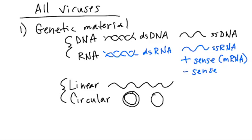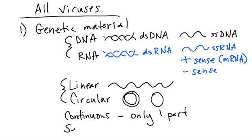The last point of diversity is that viral genetic material can also be continuous, meaning that there's only one piece of it, or it can be segmented, meaning that multiple pieces of genetic material make up the entire genome.